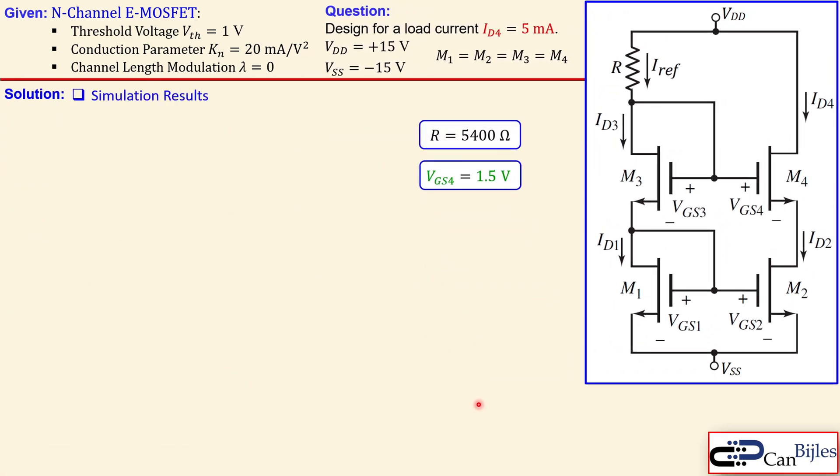Now let's collect them here together. This is the resistor value we have just calculated, and this is the VGS4 we have determined, which is between this node and that node, also between that node and that node.